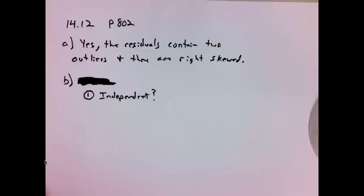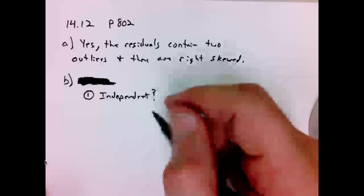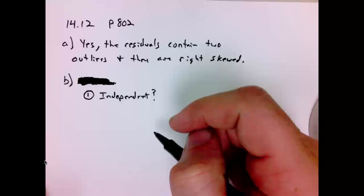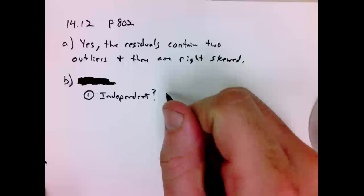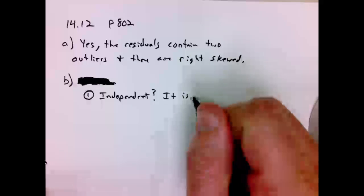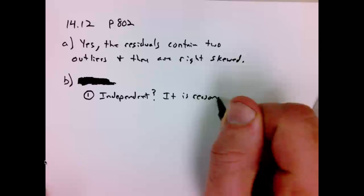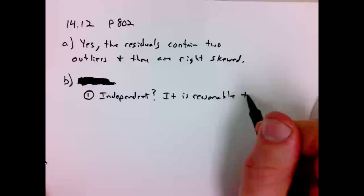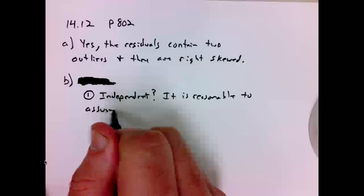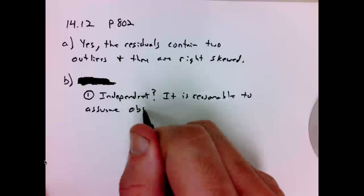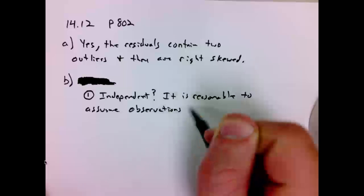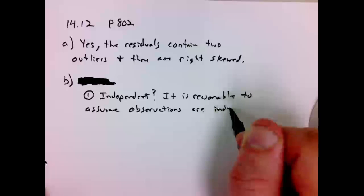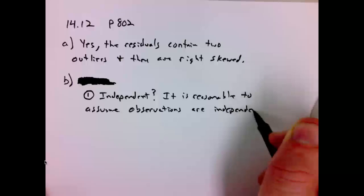Another caution I would think for independence here is do we have them around each other? One would assume one screaming infant would possibly influence another screaming infant. So we would assume that they're conducting their experiment with some care. So, independent, it is reasonable to assume observations are independent in this case. Okay.